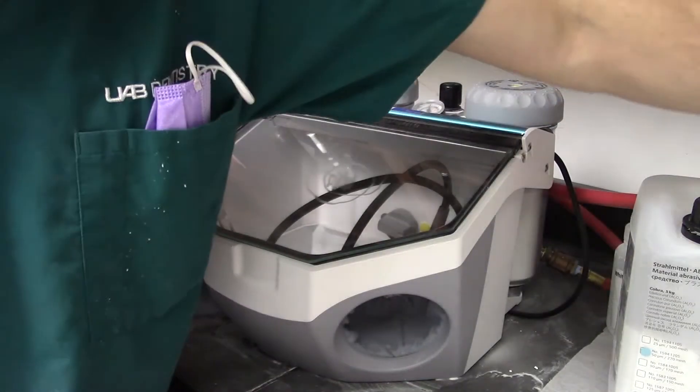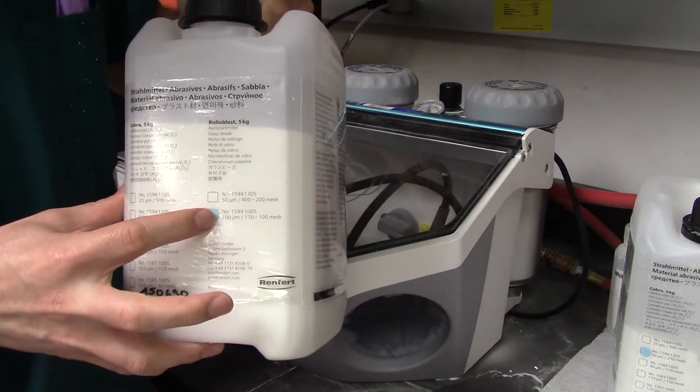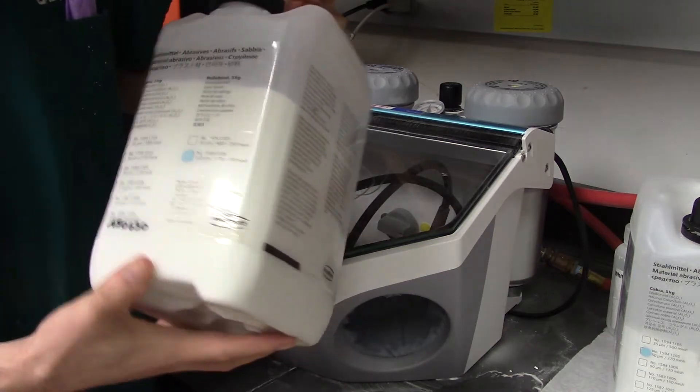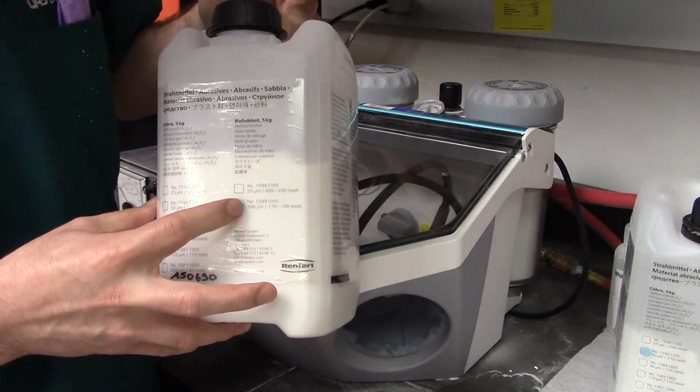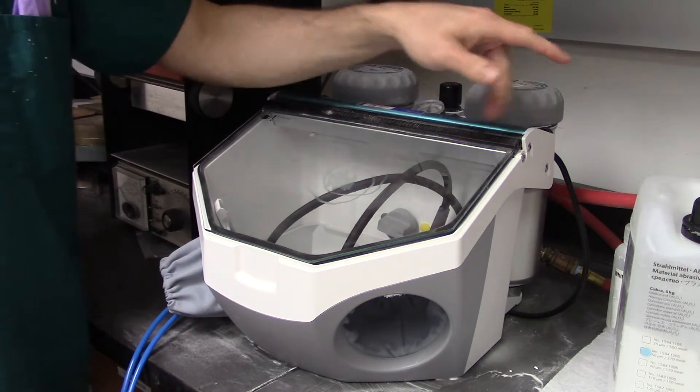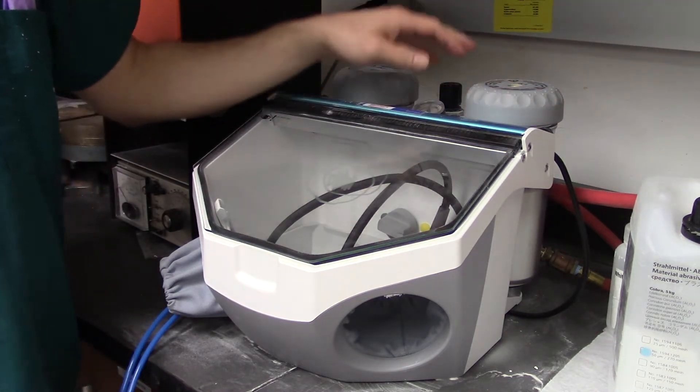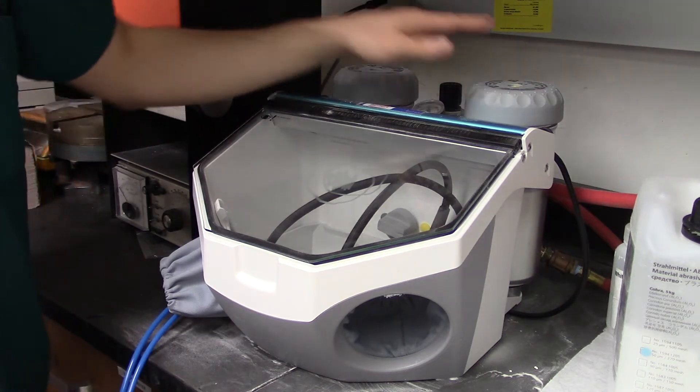The glass beads are in a similar container. The only difference is where the sticker is. And this one says it's Rolo Blast glass beads. And these are 100 micron glass beads in this container. So usually we use 50 micron glass beads. I don't know where that package came from. But that's where we replace these with when they run out.